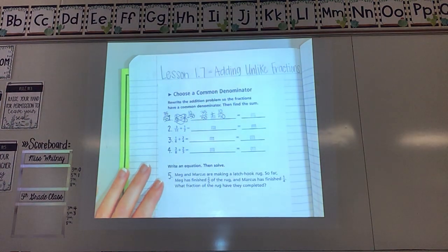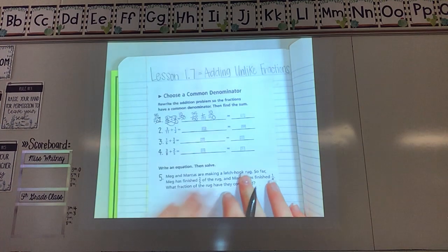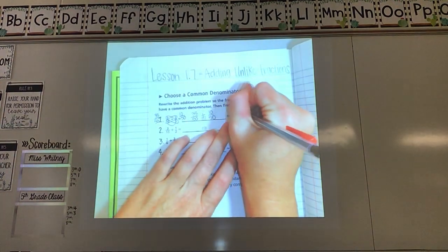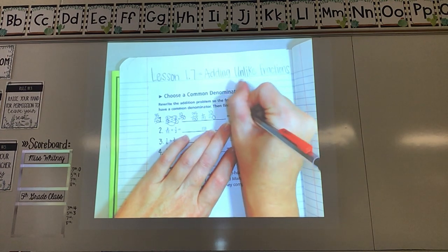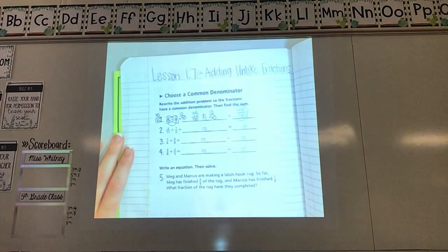And then I'm just going to figure out the rest in my head. Remember, we add across the top. So 35 plus 10 would be 45. And my bottom number stays the same, fiftieths. So my final answer would be 45 fiftieths.